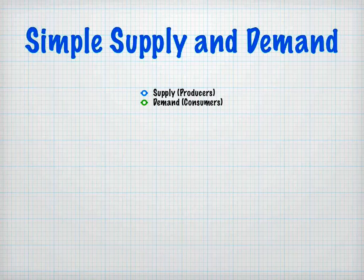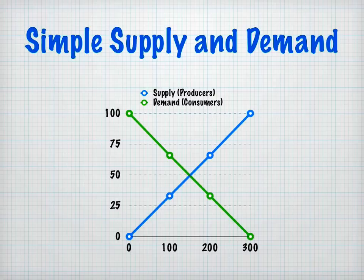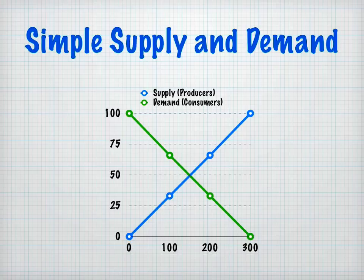Supply and demand — you can see here on these curves. The supply curve is represented by the blue line. Supply has to do with producers: how much of a good — maybe it's land, maybe it's labor, maybe it's capital — that producers are willing to produce at a certain price. And demand is green, and that is how much demand there is for a certain good at a certain price.